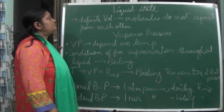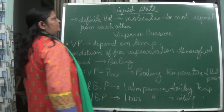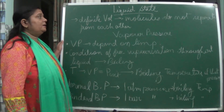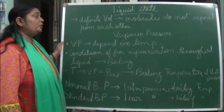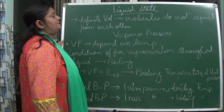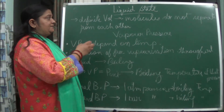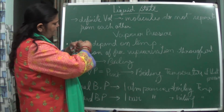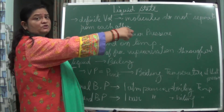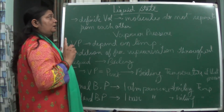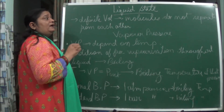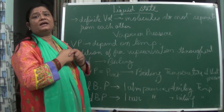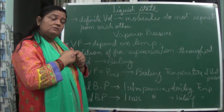When we talk about liquid state, we say that it has a definite volume. In case of gases, the molecules separate apart and there is tremendous space between the molecules. But in case of liquid, the molecules do not separate from each other so easily, and as a result we say that yes, they have a definite volume.